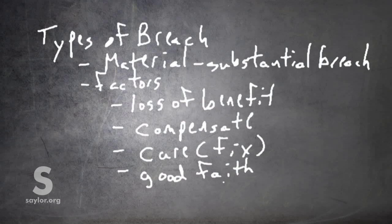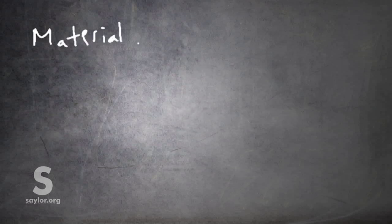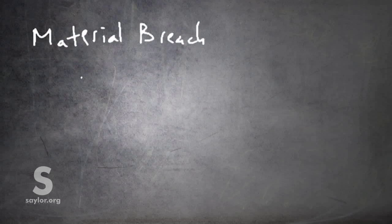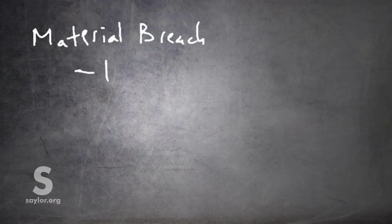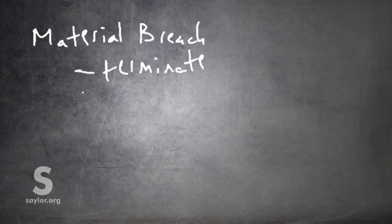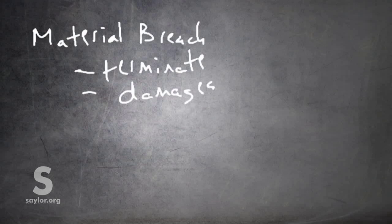So let's talk about what happens if there is a material breach. If there is a material breach, then the party that did not breach, the non-breaching party, can terminate the contract. It means they don't have to keep up their side of it and they can sue for damages under the contract. So it's pretty significant when there is a material breach.